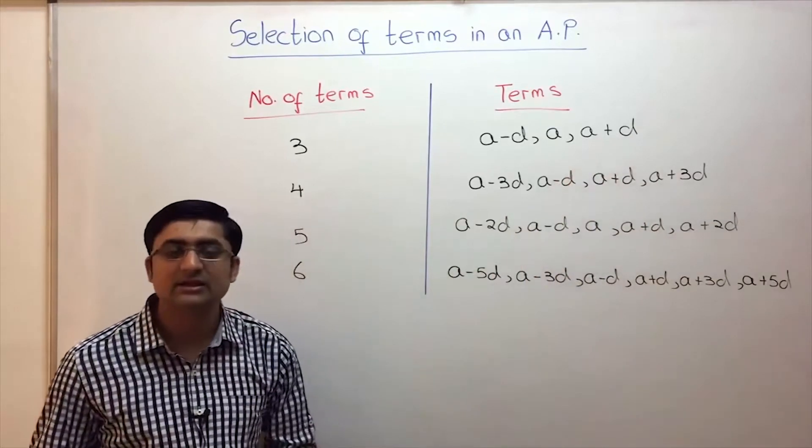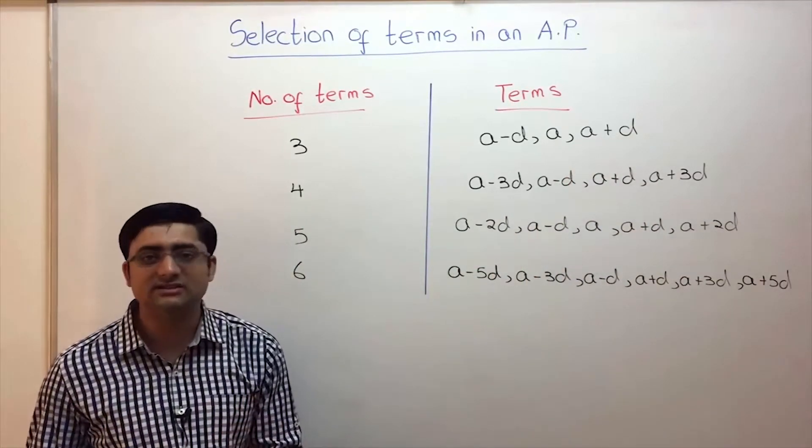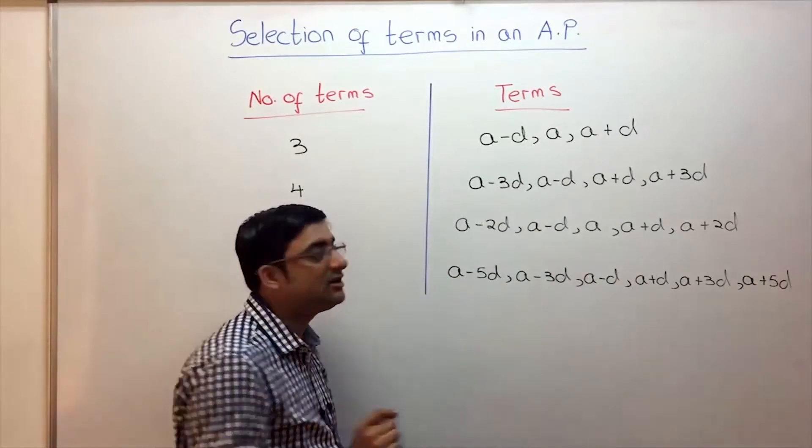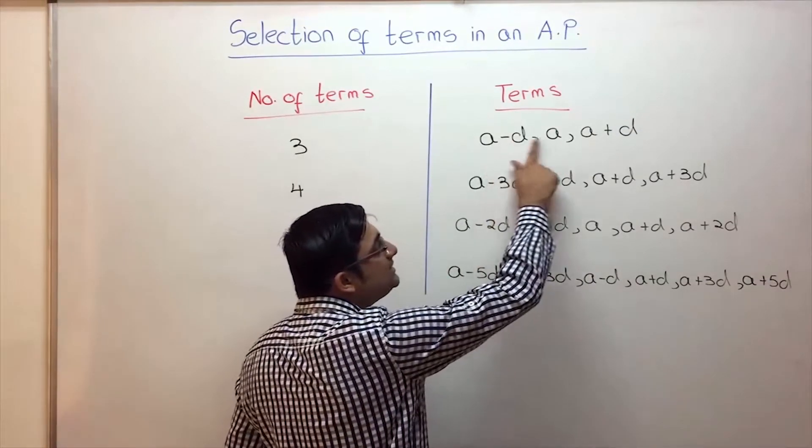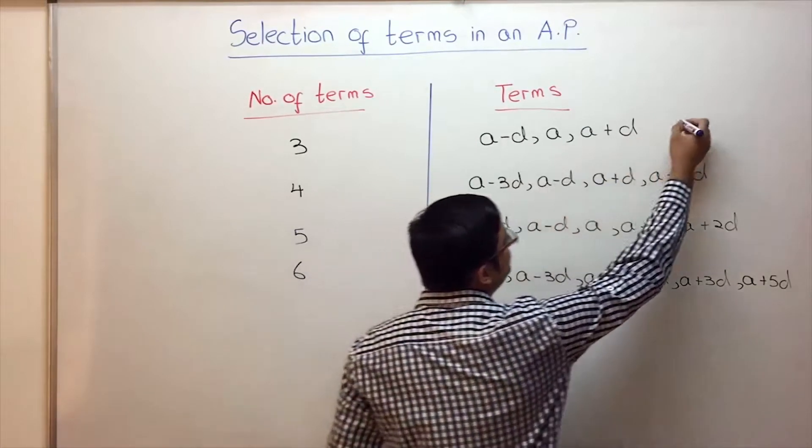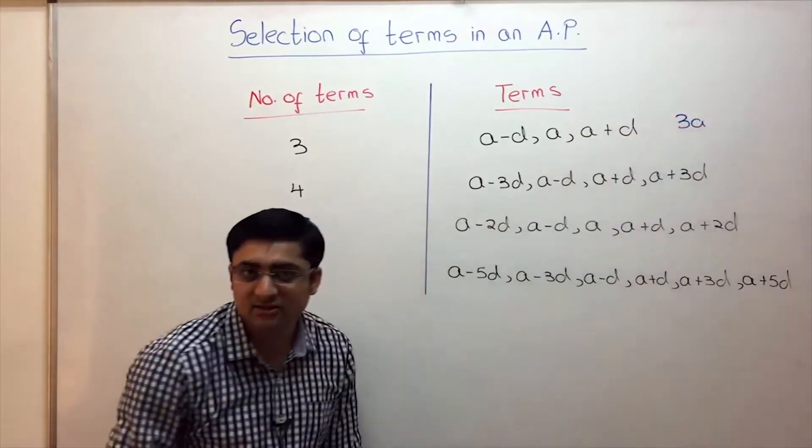Now what is the logic behind this? Often in these problems you are given the sum of the terms. So we select the terms in such a way that when we add them D should cancel out. See, what is A minus D plus A plus A plus D? If I add these three terms the sum comes out to be 3A. See, D gets canceled out.